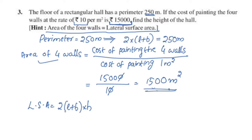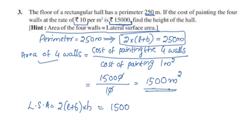We know that 2 into (L plus B) into H equals 1500, because area equals cost divided by rate, which is 15000 divided by 10. And 2 into (L plus B) is the perimeter, which equals 250.